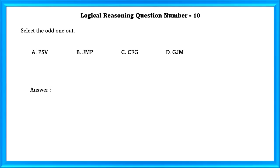Logical Reasoning Question Number 10. Select the odd one out. Option A. P plus 2 letters is equal to S. S plus 2 letters is equal to V. That concludes as P as V.